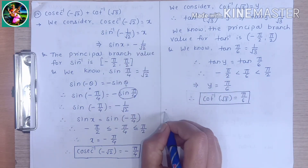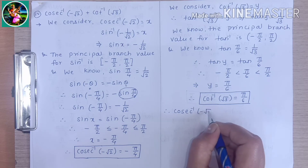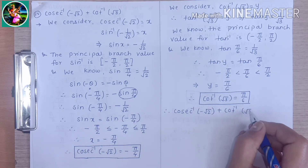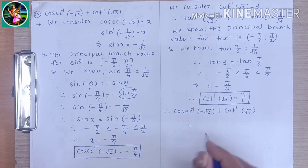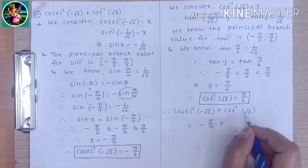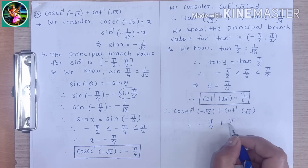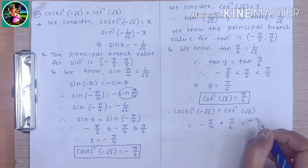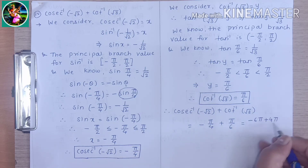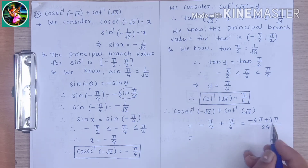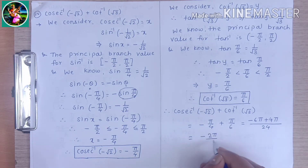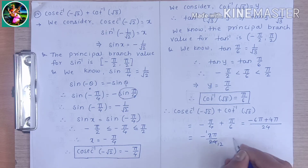Therefore, cosec inverse of minus √2 plus cot inverse of √3 equals minus π/4 plus π/6. Taking the cross product: minus 6π plus 4π divided by 24, giving minus 2π divided by 24, which simplifies to minus π/12. Therefore, cosec inverse of minus √2 plus cot inverse of √3 is equal to minus π/12.